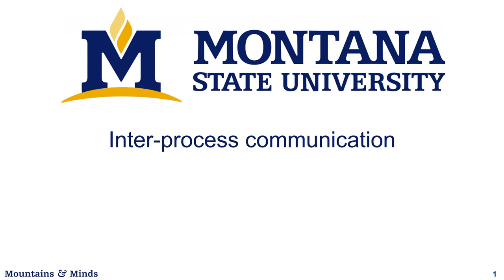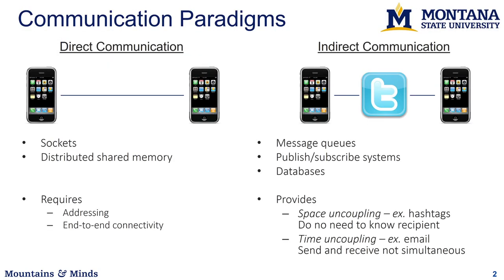The basic question we have is how to connect two different nodes together and send data to each other. The two paradigms can be divided into direct communications and indirect communications. Direct communications use things like sockets and shared memory — any time where you need to know the address of the other person and need end-to-end connectivity at the time of communication. Indirect communication uses message queues, publish-subscribe systems, databases, tuple spaces, and other systems with a broker in the middle to handle messages.